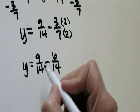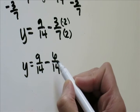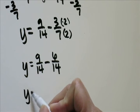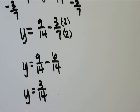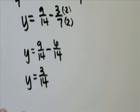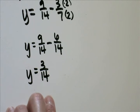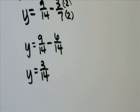Now we've got our common denominator, so we just take 9 minus 6, which is 3. y equals 3 over 14. We can't reduce that anymore because 3 is not a multiple of 14. So that's our final answer.